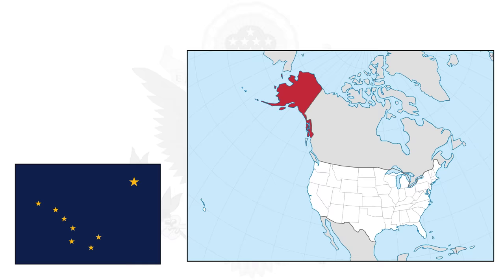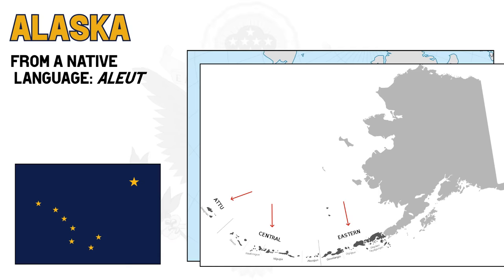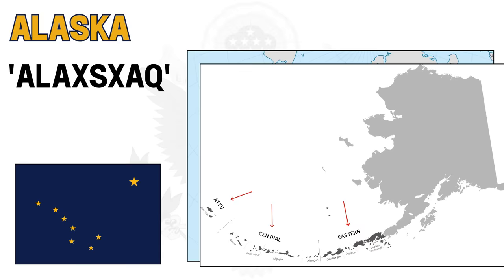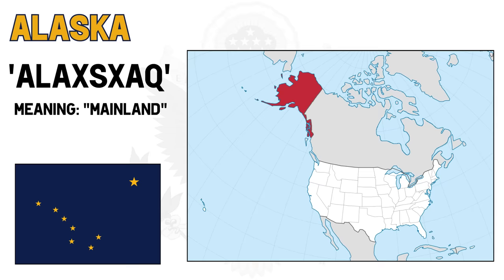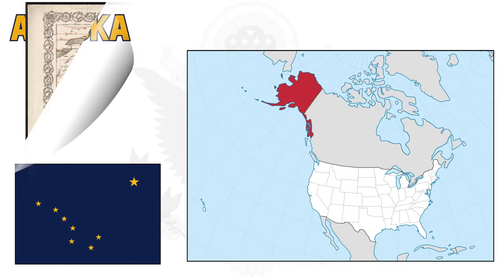Starting with the two non-contiguous states. Alaska's name comes from a native language, Aleut, spoken in this chain of islands. They use the word Alasksak, which I'm mispronouncing, to describe the meaning of 'mainland,' or if we literally translate it, 'the object towards which the action of the sea is directed' — so the place where the waves hit, I guess.